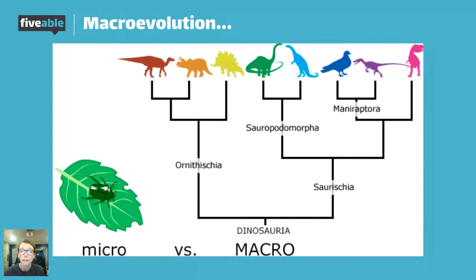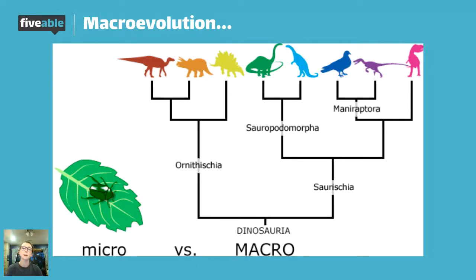A really common misconception is that humans evolved from monkeys. That's not true. If we evolved from monkeys, monkeys would no longer be here — they would have all evolved into humans, which is not the case. We did not evolve from monkeys, but we do have a very recent common ancestor with monkey species. We diverged our separate ways from that common ancestor, which is why we share so many traits and about 99% of our DNA with chimpanzees. That's what macroevolution is about.